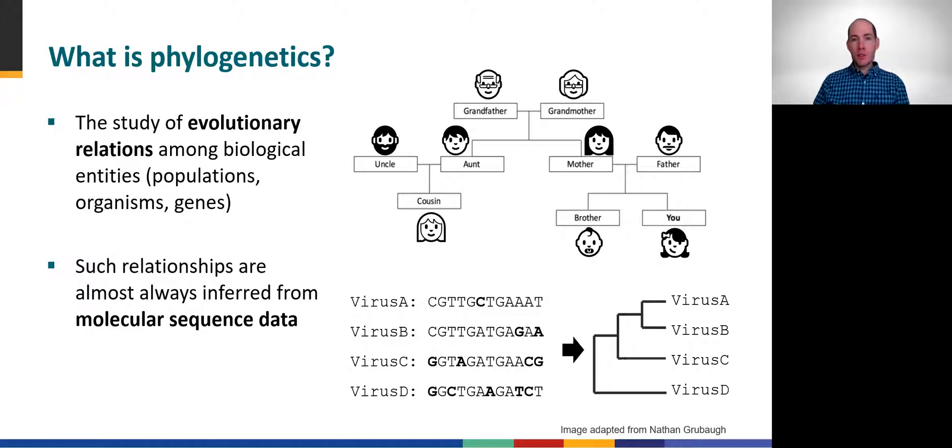We almost always infer these relationships among viral strains by analyzing molecular sequence data. For example, we can compare these four nucleotide sequences from viral strains and infer that virus A is more closely related to virus B.